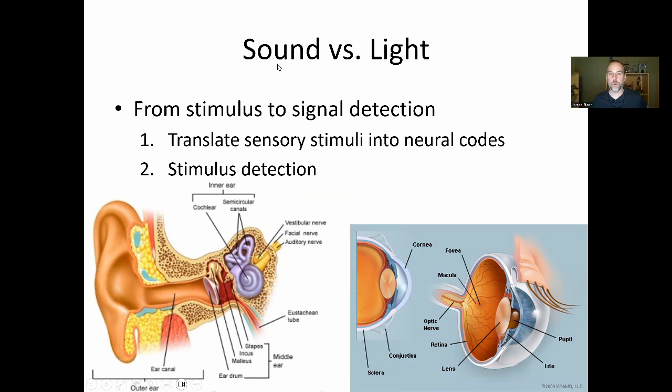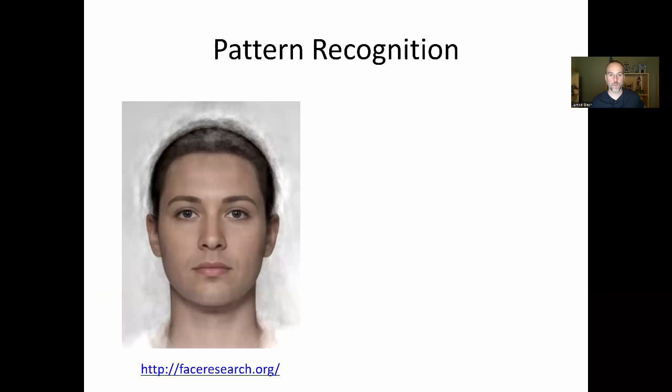So reaction time is faster to sound than to light for two reasons: sound is faster at translating the sensory stimulus into a neural code, and for sound we're also faster at stimulus detection because fewer brain areas are involved.